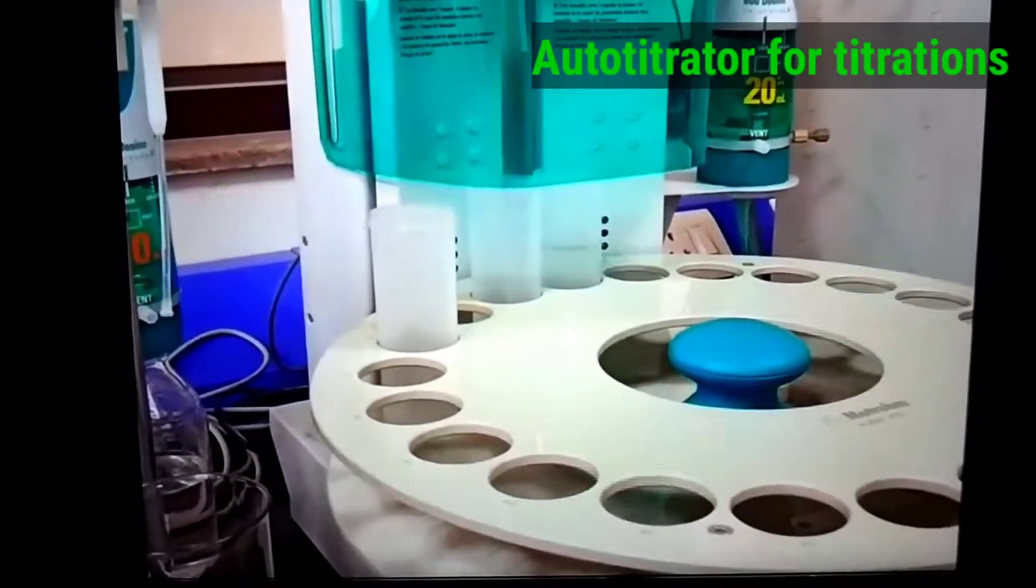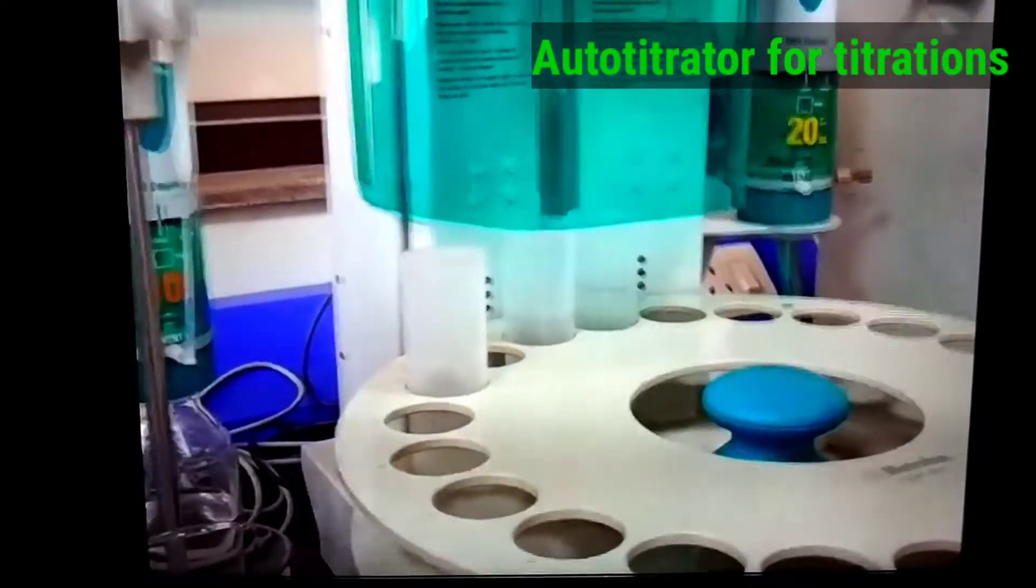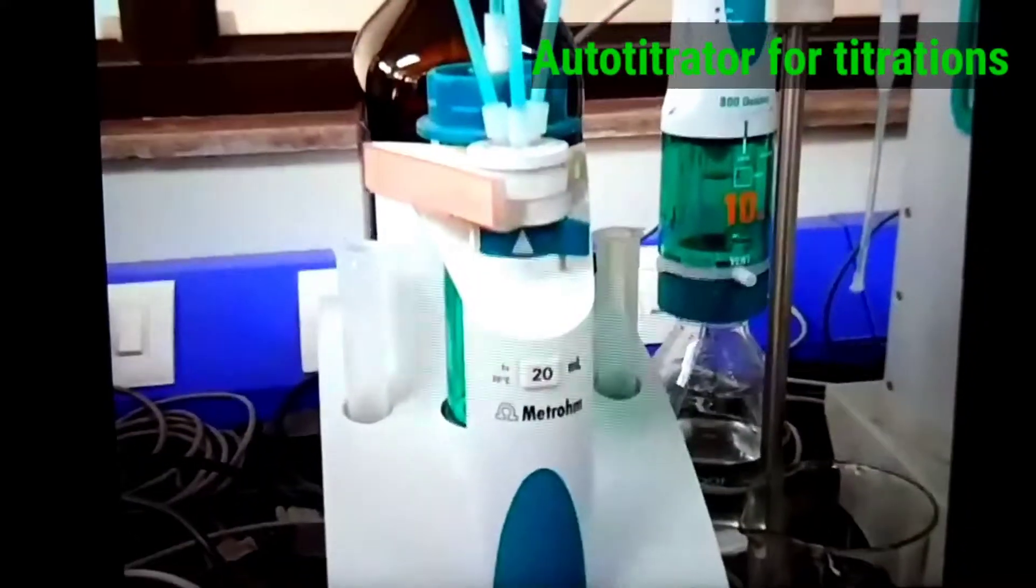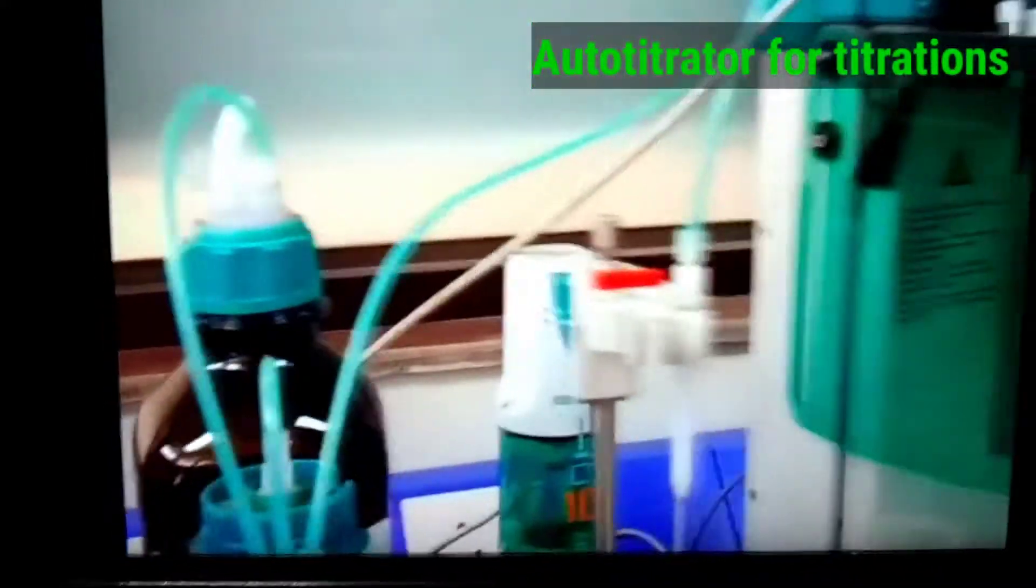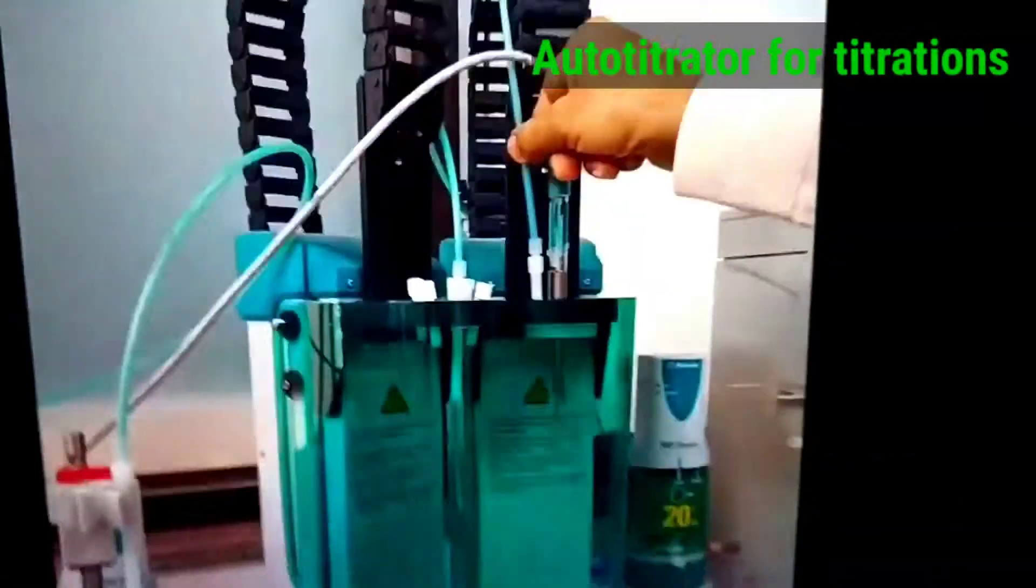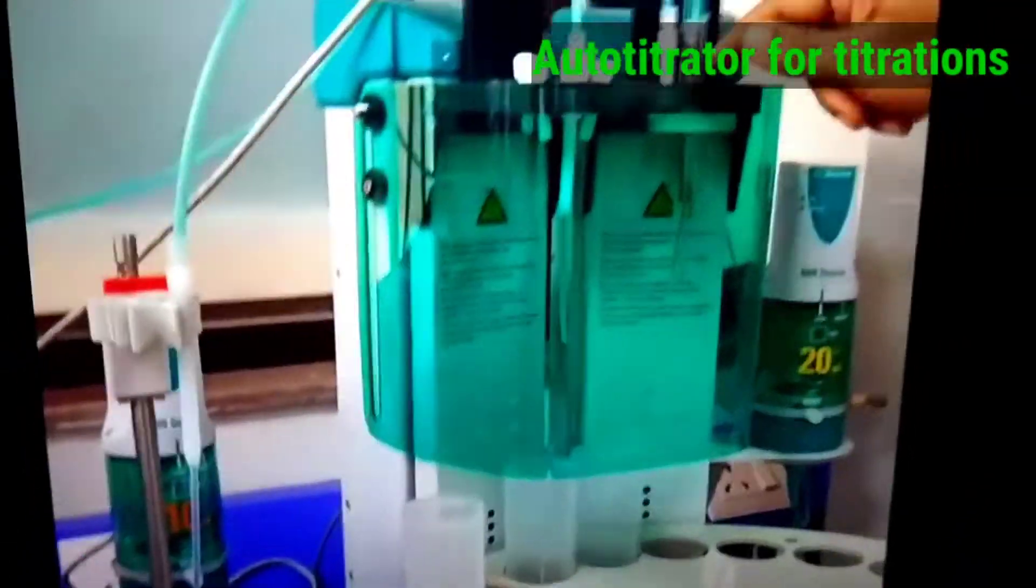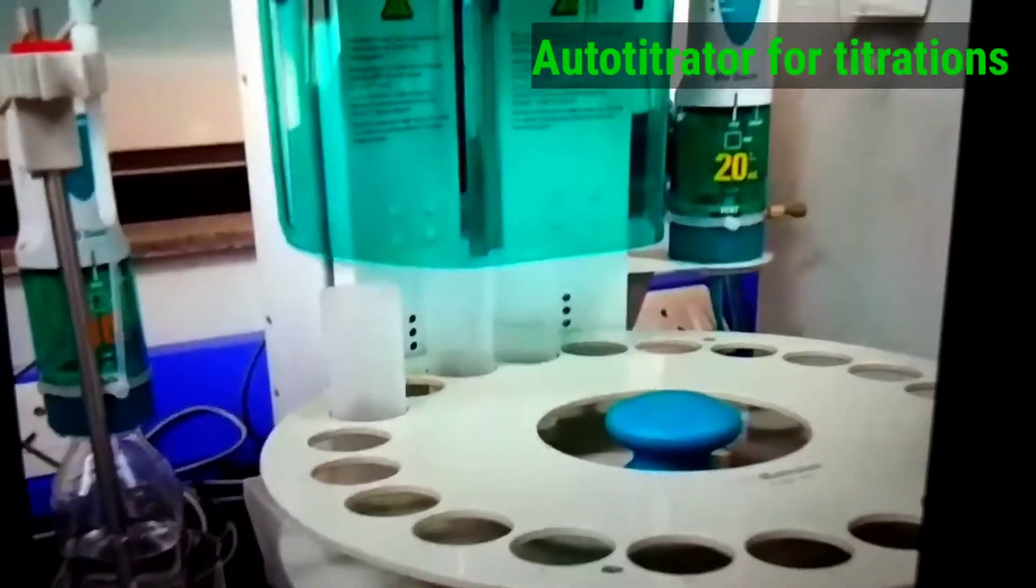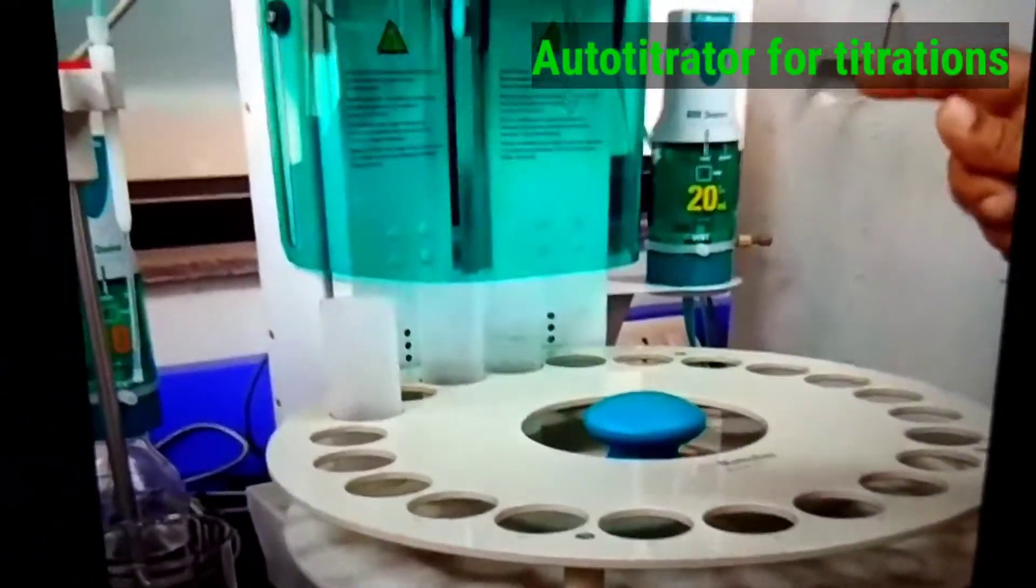Then what will happen? This acid is coming drop by drop, and it will be added into the sample through these tubes. So drop by drop this acid will be added into that one. Then the pH of this water sample will change.